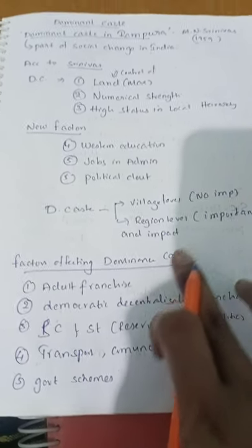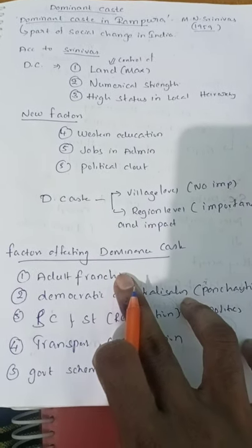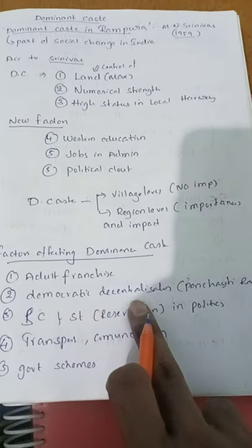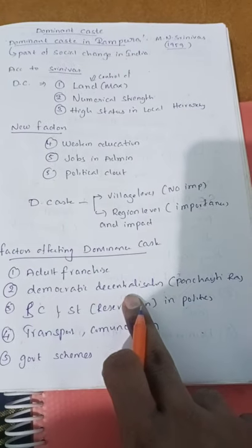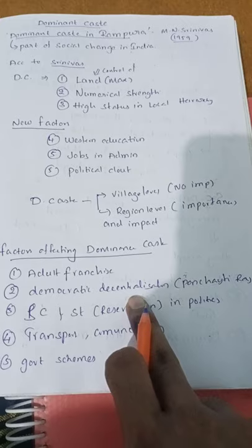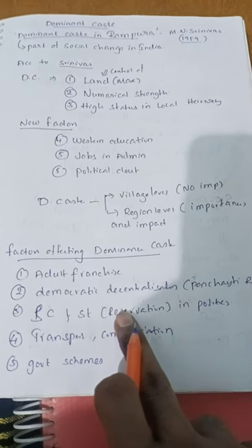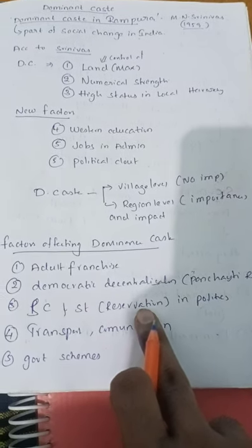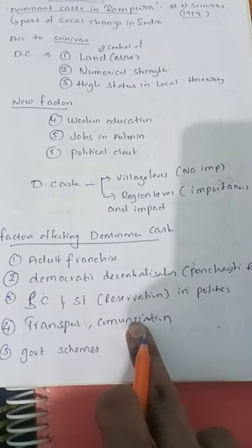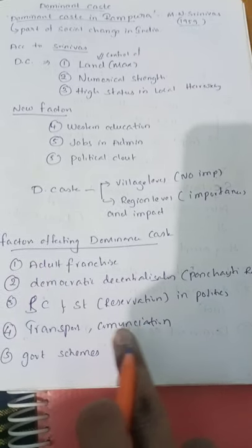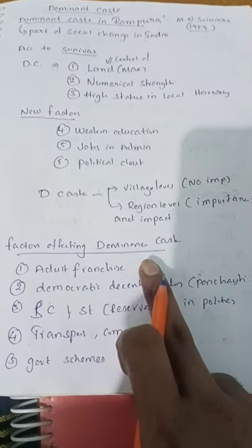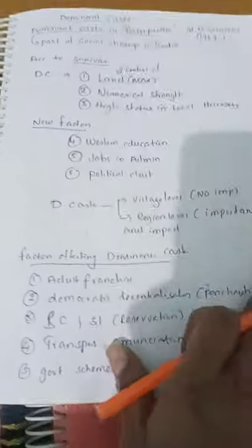What are the factors affecting dominant caste recently? These include adult franchise, democratic decentralization through Panchayat Raj, SC/ST reservations, better transport and communications, and government schemes. All these factors are dealing a blow to the institution of dominant caste.